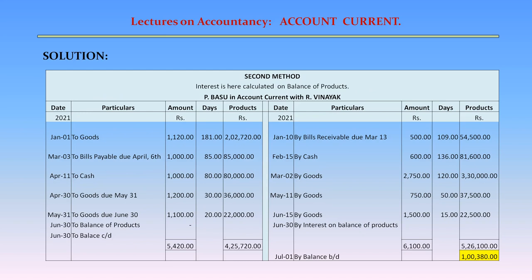Second Method. In this method, interest is calculated on the balance of products. P. Basu in account current with R. Vinayak. Columns on debit and credit sides: date, particulars, amount, number of days, products. Debit side entries: January 1 — To goods: Amount Rs. 1,120; Days 181; Products = 2,02,720. March 3 — To bills receivable due April 6: Amount Rs. 1,000; Days 85; Products = 85,000.